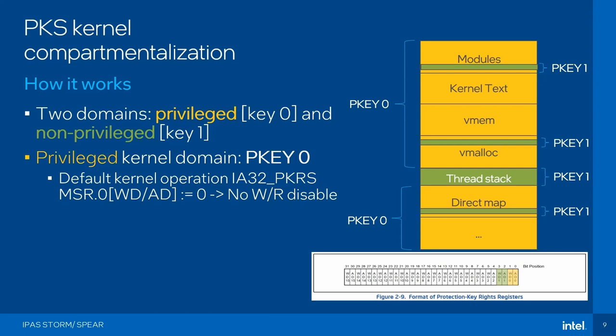If you're in the privileged domain, you should be able to access everything — that's fairly simple, we just keep the normal mappings as you have in the kernel, that's normal kernel operation. Suppose we're in some memory management code — we obviously want to be able to access a lot of memory, so we're in the privileged domain. We don't need to do anything special — we keep all the access-disabled and write-disabled bits to zero. We don't want to override any page table permissions when we're in the privileged kernel domain.